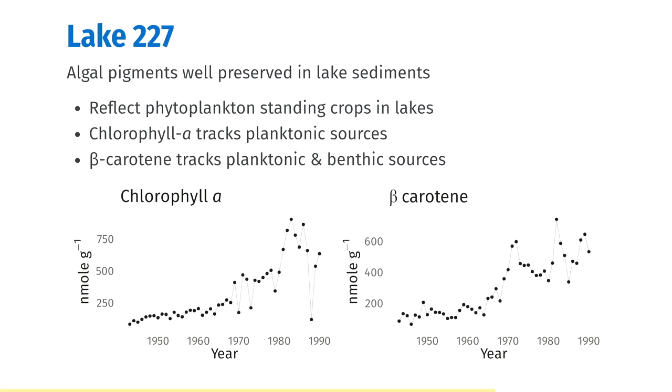The example I'm going to use is from Lake 227. It's a sedimentary record of algal pigments that reflect the standing crop of phytoplankton in the lake. Chlorophyll A tracks the planktonic sources, while beta-carotene tracks the planktonic and benthic sources.